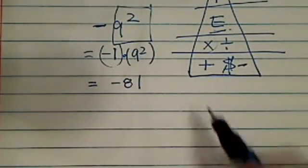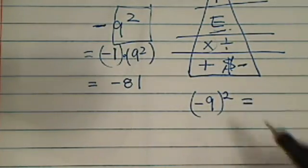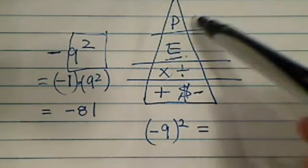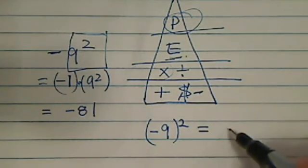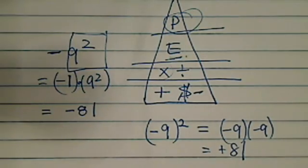If we switch it around a little bit, -9 in parentheses squared, now that becomes a different problem because parentheses, as we said over here, supersedes everything. So it's -9 times -9, which equals positive 81.